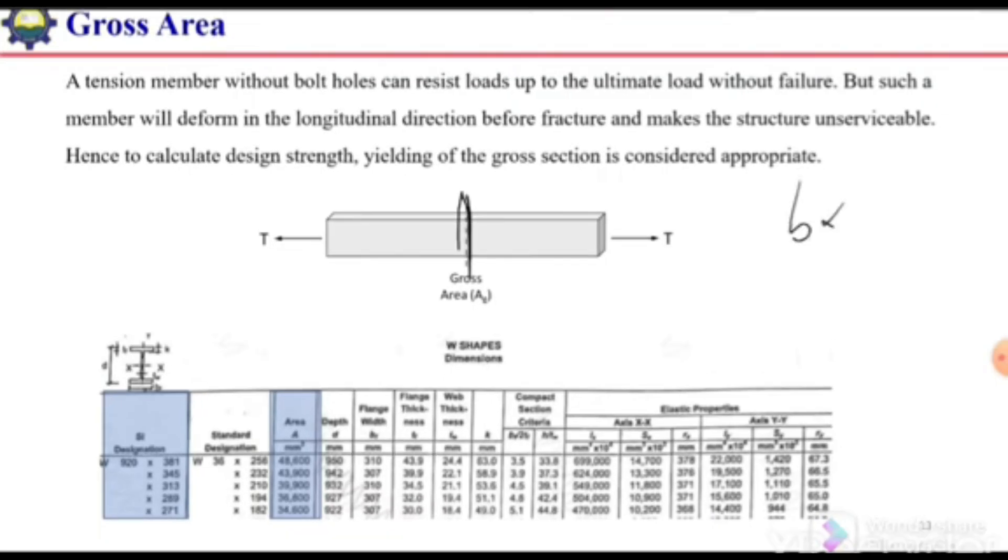In case of rectangular sections, it will be simple b times h or b times d, and in case of a circular section, it will be π d squared by 4.